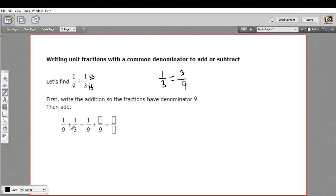So I can rewrite this problem. 1/9 plus 1/3 is the same as 1/9 plus 3/9. Now I just add the tops and put it over the denominator. So 1/9 plus 3/9 is 4/9. That is how to do addition of fractions.